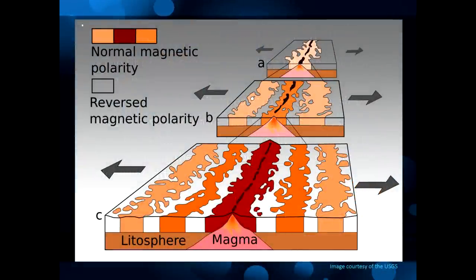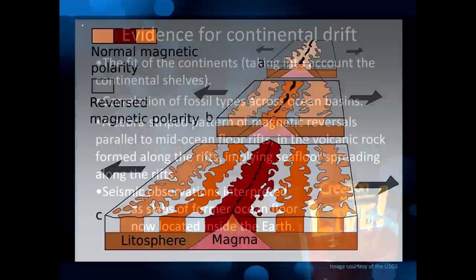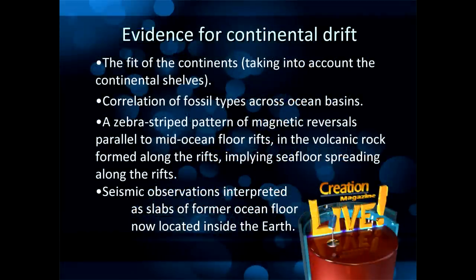As new ocean floor is created — as the continents are pulled apart — the magnetic field of the earth flips back and forth, and those magnetic reversals are recorded in the rocks in the mantle. Another evidence is seismic observations interpreted as slabs of former ocean floor now located inside the earth. Measurements of rock temperature and density make it pretty clear those are ocean plates that haven't yet totally melted.